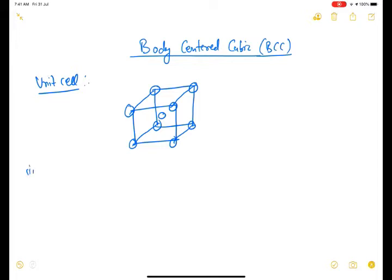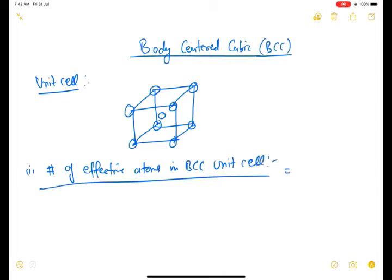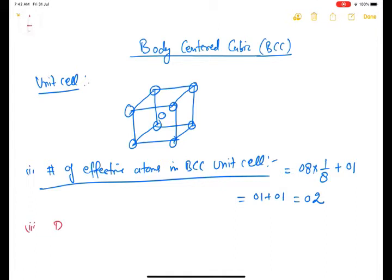To calculate the number of effective atoms in a BCC unit cell: we have eight corner atoms, and each corner atom contributes one-eighth of its volume, plus one atom right at the center. So in total there are two atoms per unit cell in BCC.